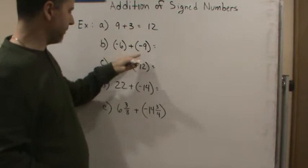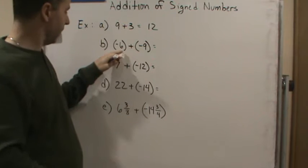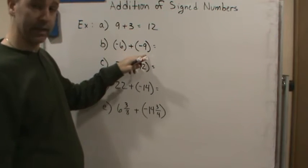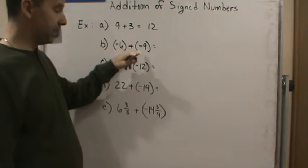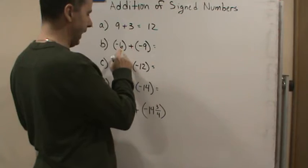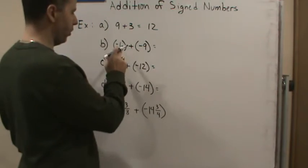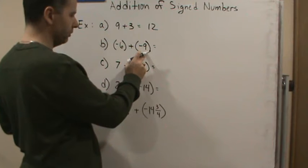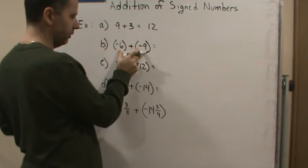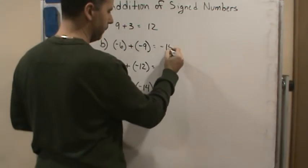For part B, again they have the same sign, so that means I'm going to add the values and keep the sign. So I'm going to add 6 and 9 — 6 plus 9 is 15. Since they're both negative, the answer is going to be negative 15. So you add the absolute values and keep the sign. This is going to be negative 15.